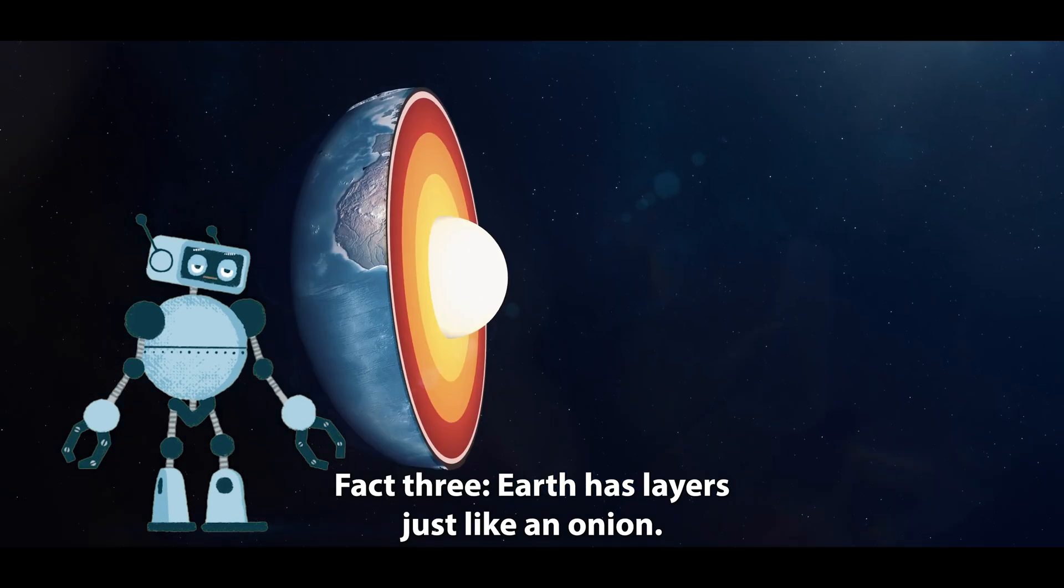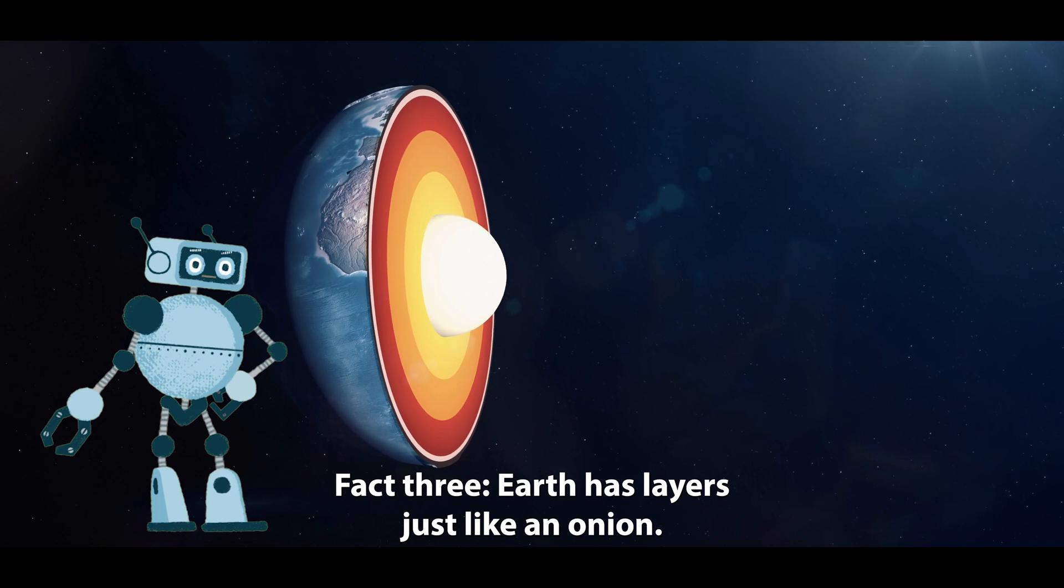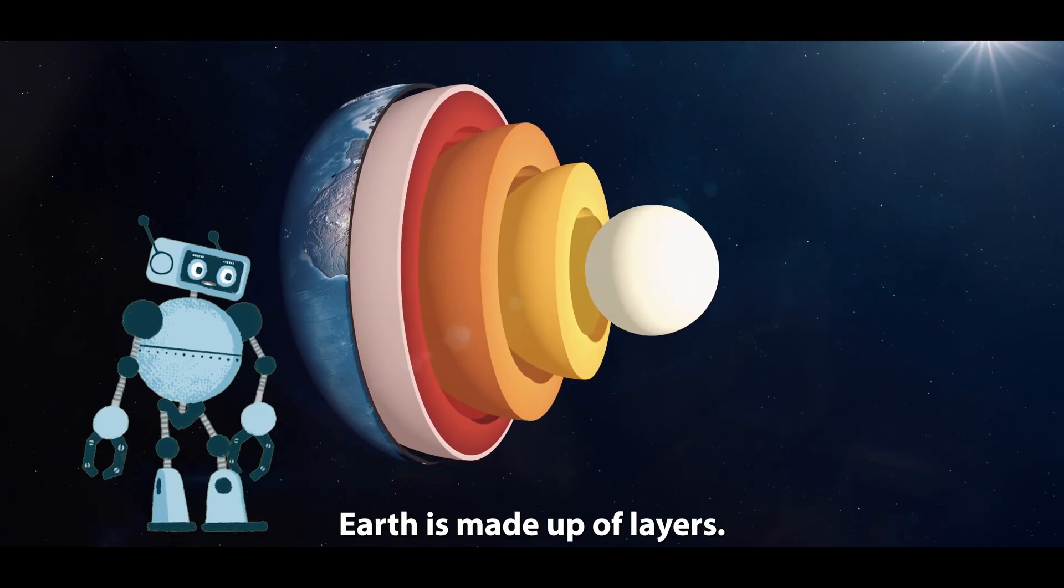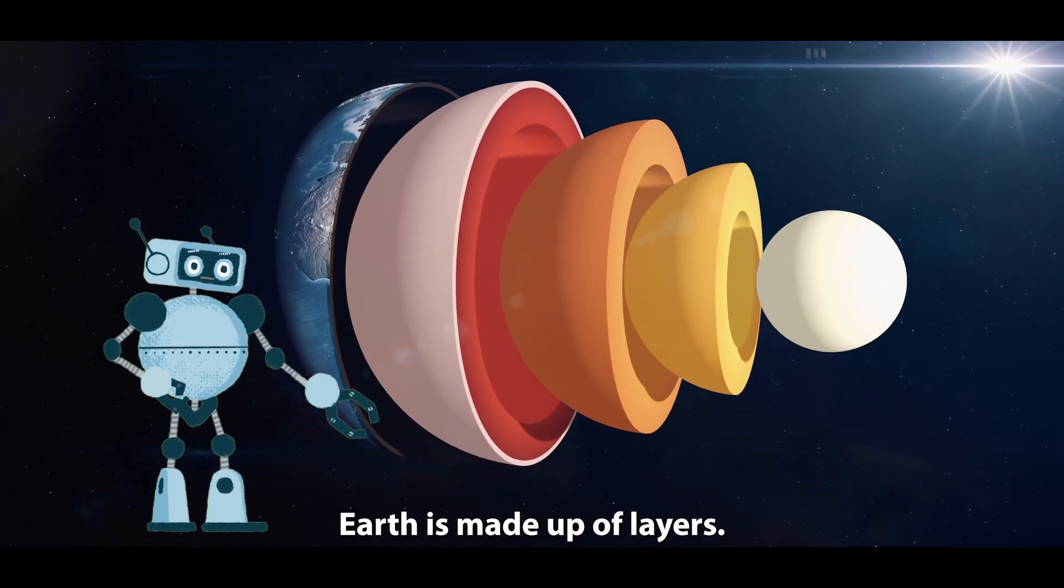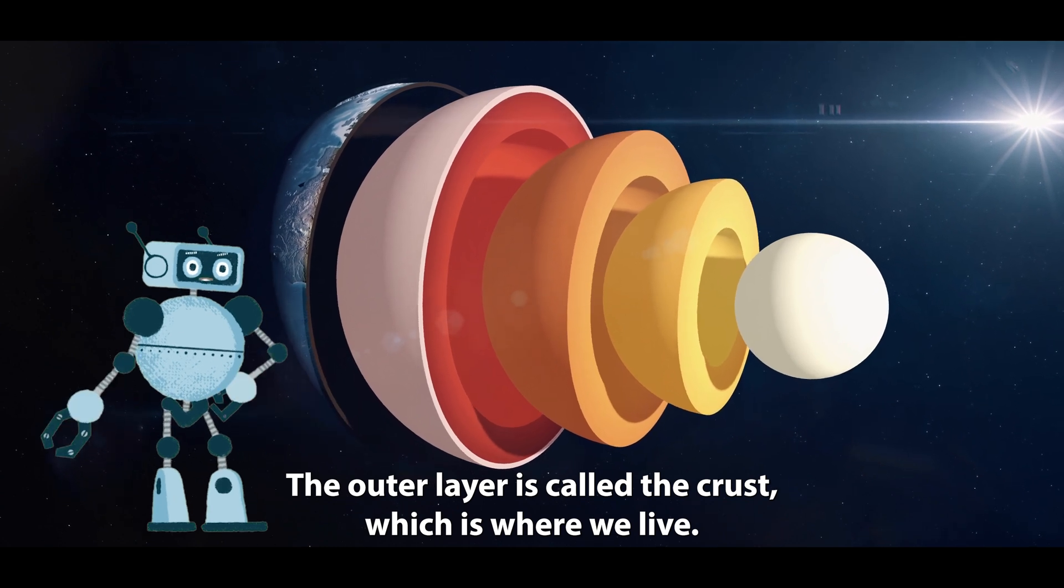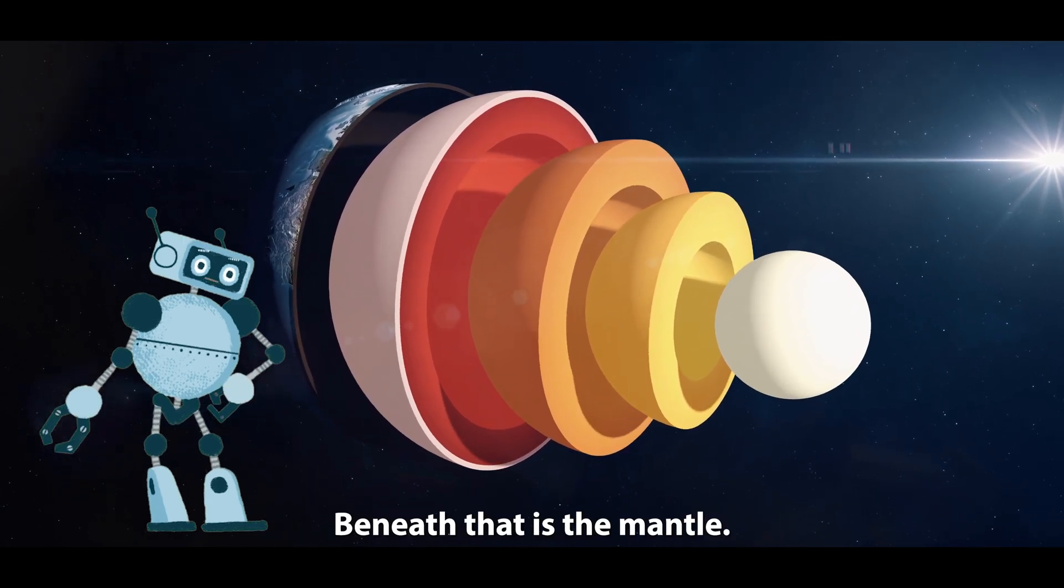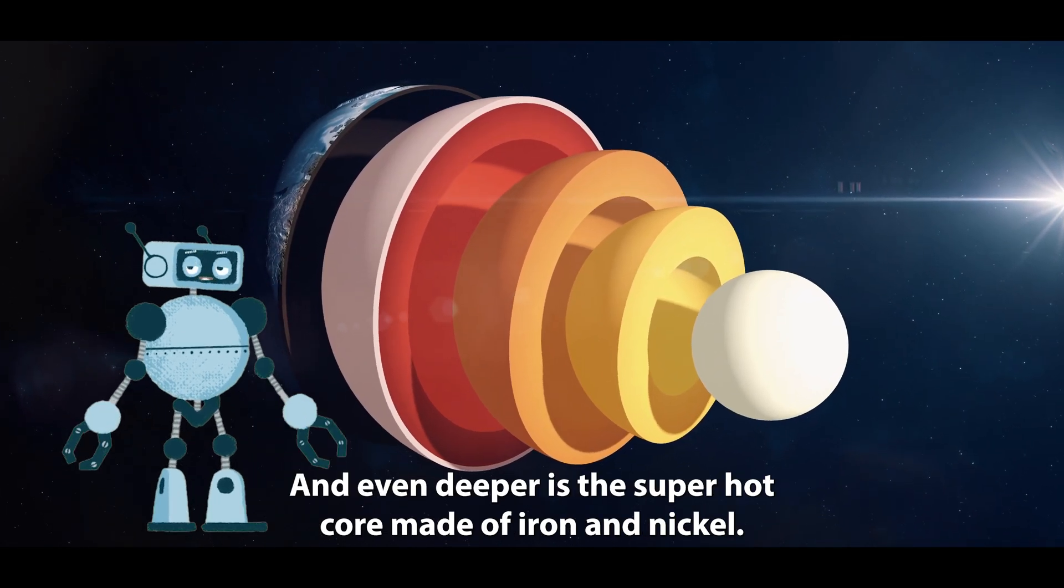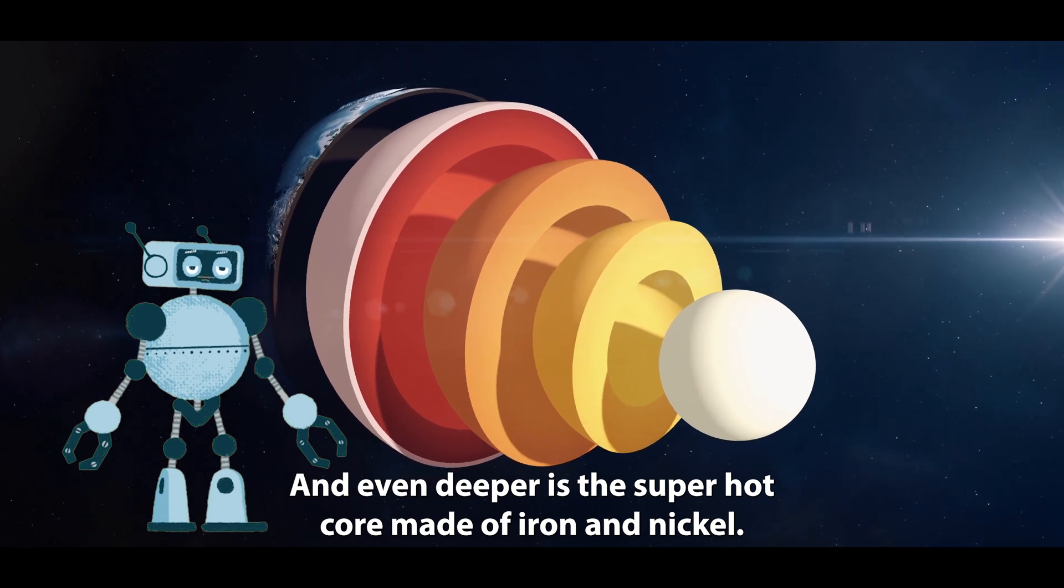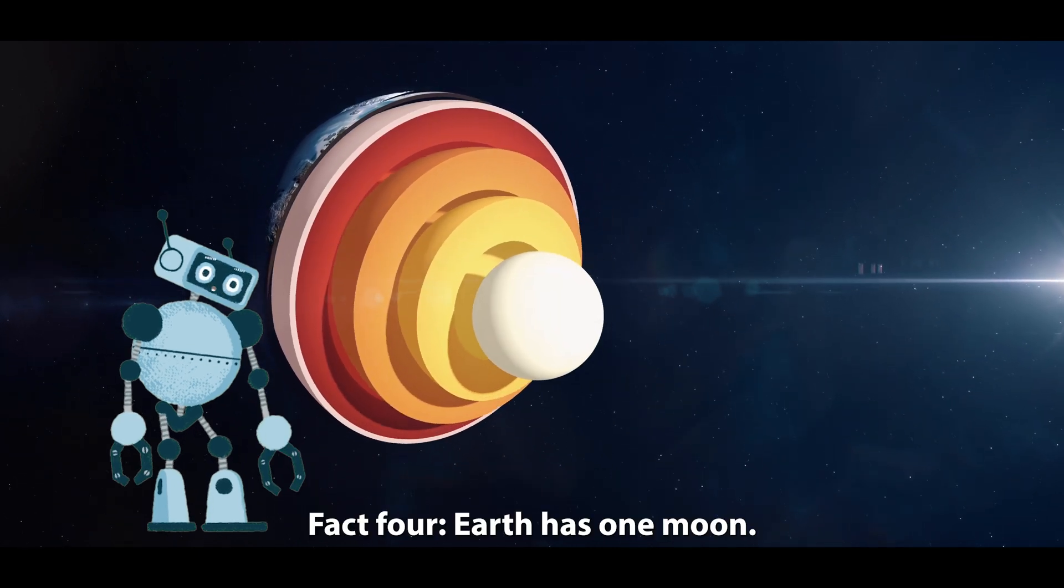Fact three: Earth has layers. Just like an onion, Earth is made up of layers. The outer layer is called the crust, which is where we live. Beneath that is the mantle, and even deeper is the super-hot core made of iron and nickel.